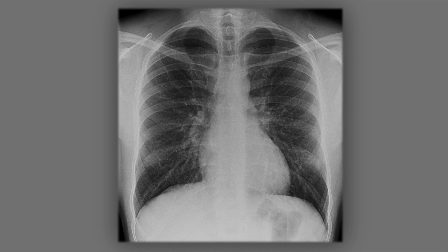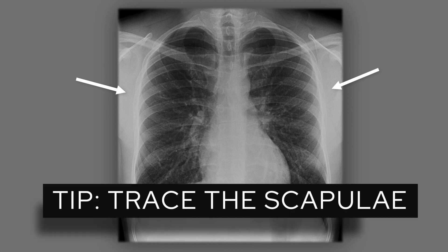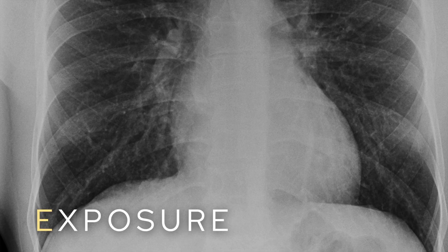The simplest way to tell whether an X-ray is AP or PA is to look for a label — that's the most reliable method. If there's no label, look at the scapulae: if they are out of the way of the lung fields, some attempt was likely made to move them, suggesting a PA film. If the scapulae overlie the lung fields, it's either an AP film or a PA film where the patient couldn't cooperate. It's good practice to trace the scapulae for pathology and to avoid mistaking a scapular edge for a pneumothorax.